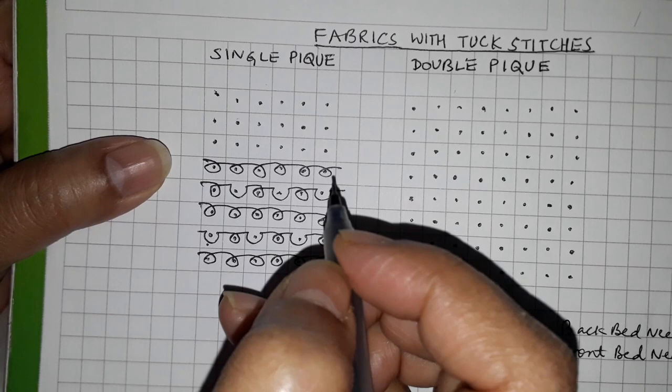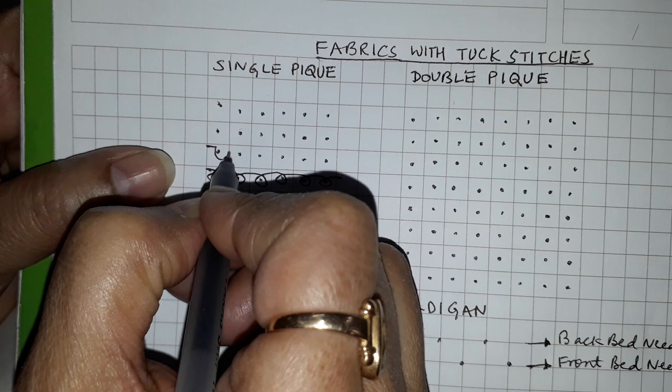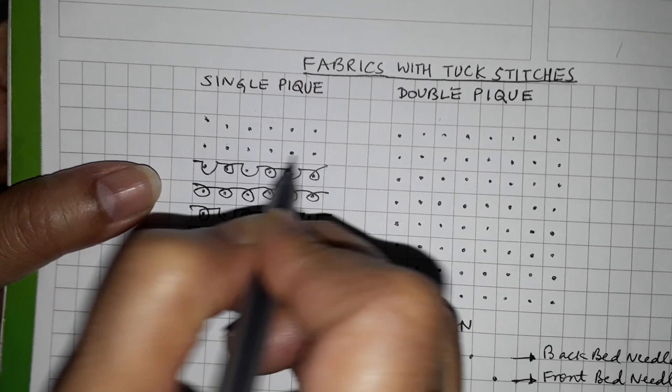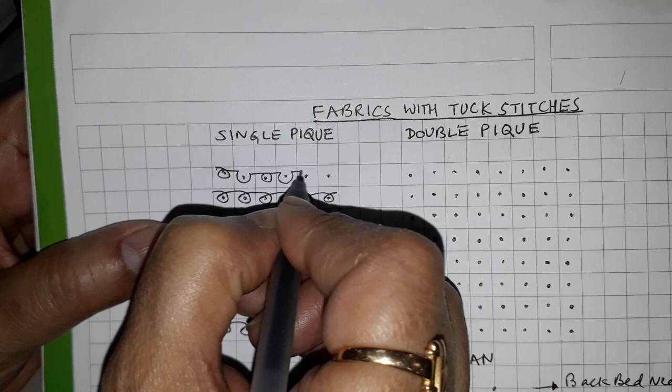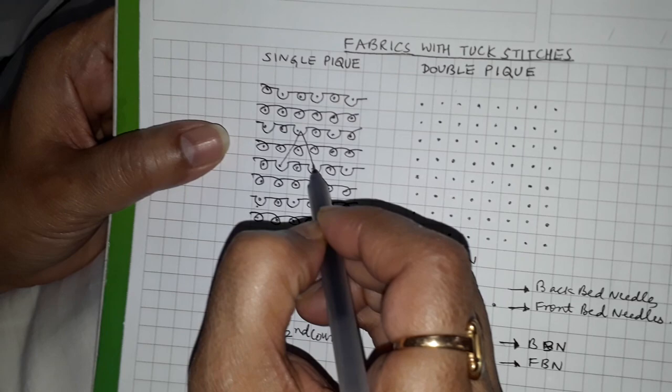It's one course, then again repeat the design. The second course will be repeated again. Knit stitches, then knit-tuck-knit-tuck-knit-tuck. So how do you get this diamond-like design? The tuck stitches basically create the design.